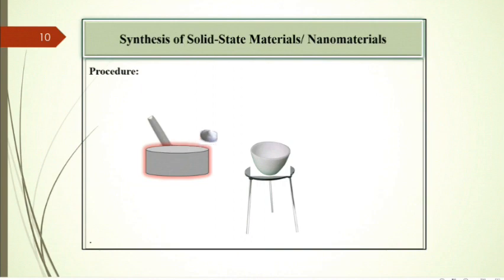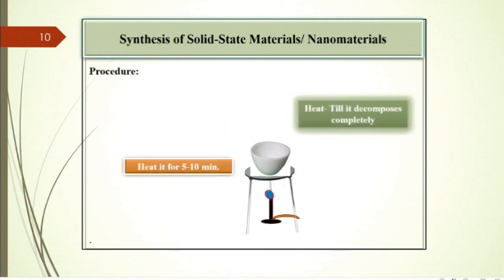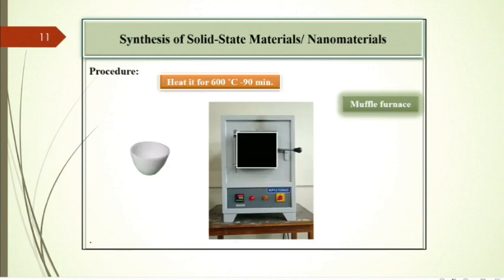After that, transfer the final product into silica crucible and ignite it on a burner till it decomposes completely. It will require 5 to 10 minutes. Then place the crucible in muffle furnace and anneal it at 600 degrees centigrade for 90 minutes.